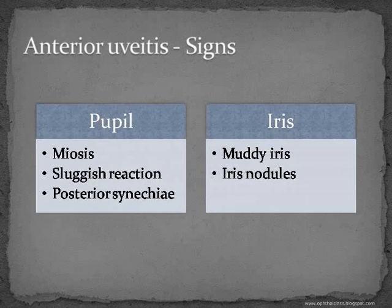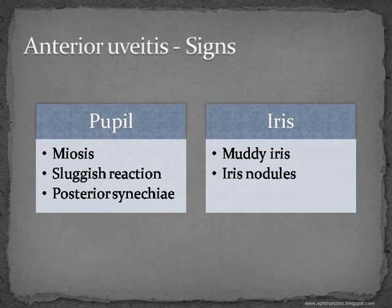As mentioned, the iris becomes like a waterlogged sponge and loses its normal architecture. Normally there are a lot of crypts, the whole surface has a shine, and the crypts are very clearly defined, but now exudation fills them up and the end result is a muddy-looking iris. The iris may also have iris nodules — these are granulomatous nodules, not seen in the non-granulomatous type of uveitis.